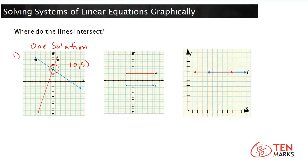Let's look at the second example. Here are two different lines — line a in red and line b in blue. These two lines are parallel. They will never, ever intersect, which means that parallel lines have no solution.